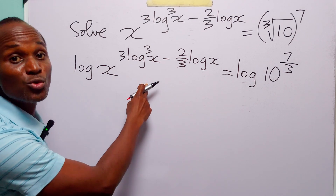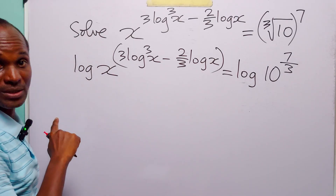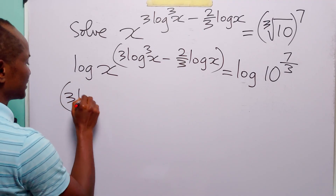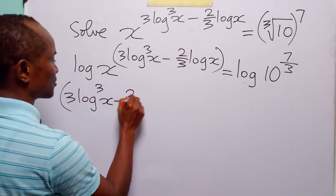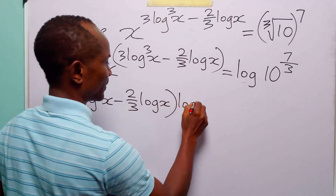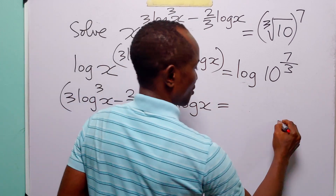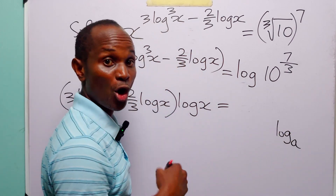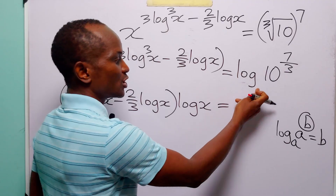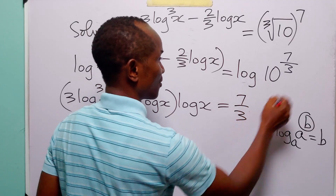The next thing we are going to do is to apply the power rule of logarithms. We are going to bring down the exponent to the front of the log to become a multiplier. When we do this, we have 3 times log cube of x minus 2 over 3 times log x, multiplied by log x. And remember that log base a of a to the power b is equal to b, so log base 10 of 10 to the power 7 over 3 is equal to 7 over 3.